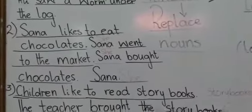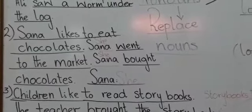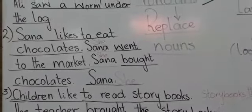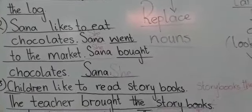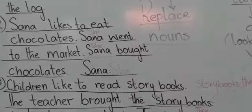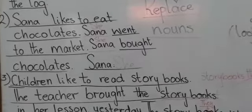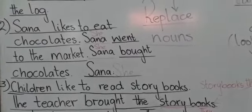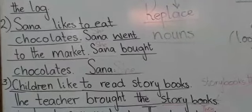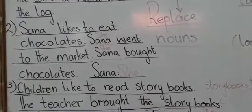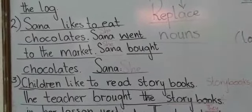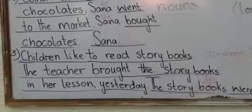In the second example: Suna likes to eat chocolates. Suna went to the market. Suna bought chocolates. Here we are repeating Suna, so we will replace Suna with 'she' — she is a pronoun. Read with me: Suna likes to eat chocolates, she went to the market and she bought chocolates.